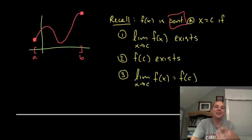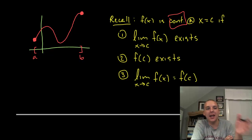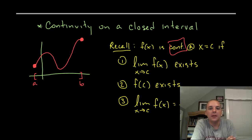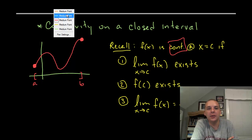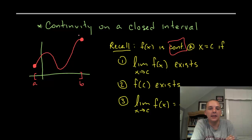Now what does it mean to be continuous on an entire interval not just at a particular x value? Well very simply, if it's continuous at every point on the interval, we would say that it's continuous on the interval. So let's see here, what's the issue?